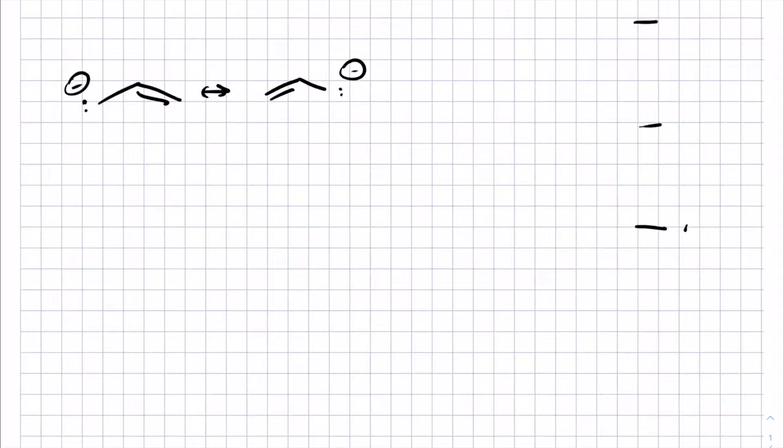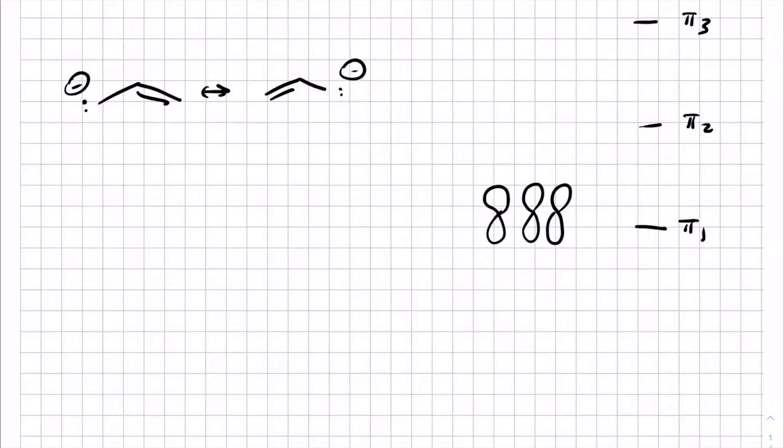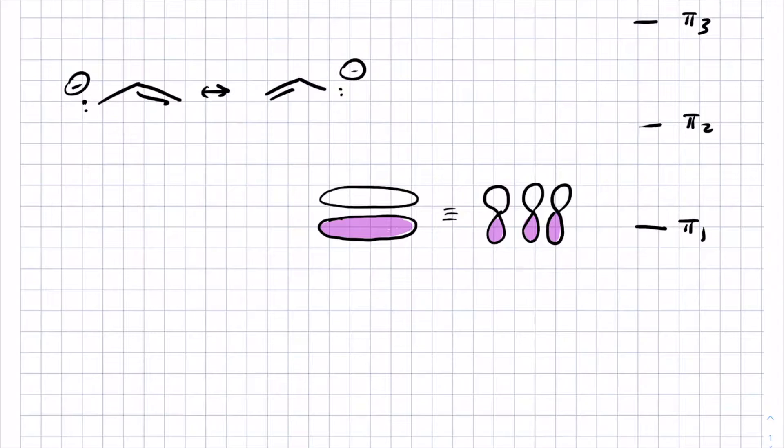Recall that we generated three pi orbitals: pi1, pi2, and pi3. Schematically we represent these pi orbitals as though you had three independent p orbitals next to each other engaging in side-by-side overlap. In reality, though, what this looks like is an extended lobe of electron density above and below the plane of the sigma bonds.